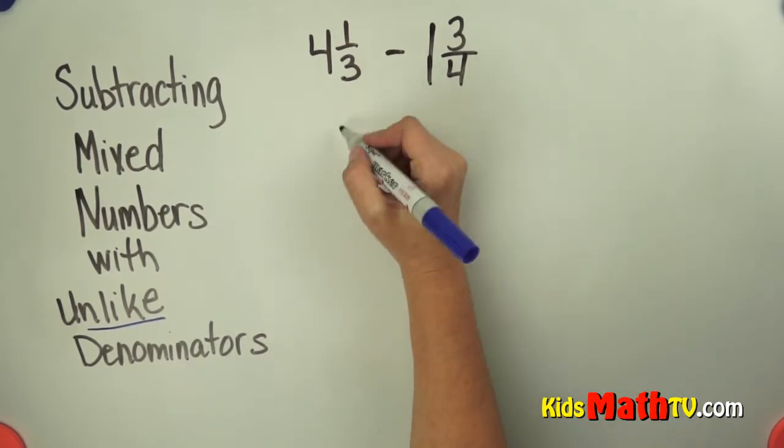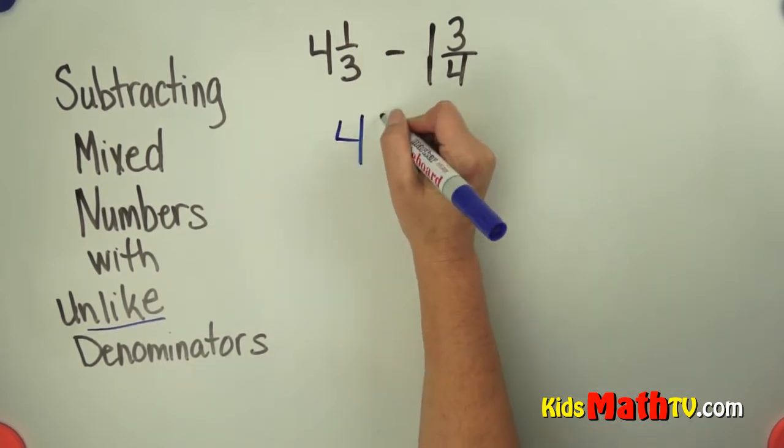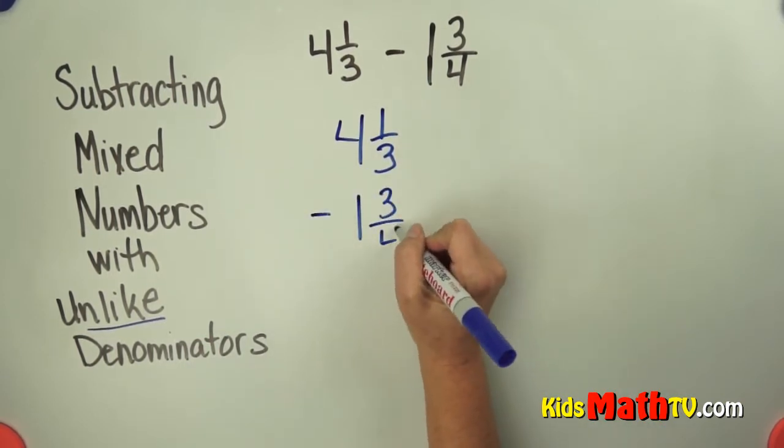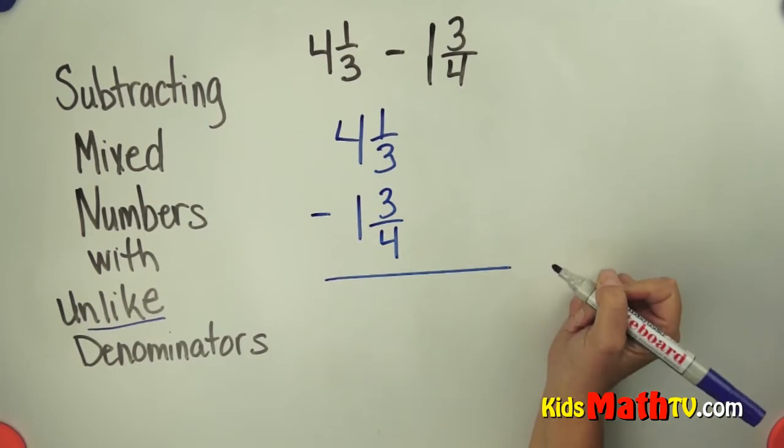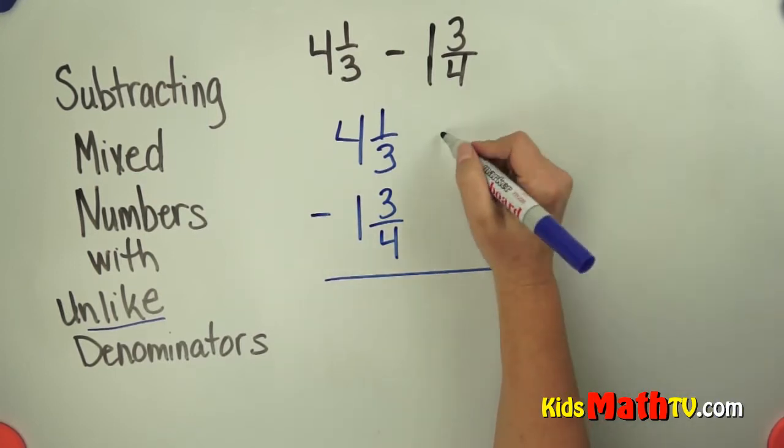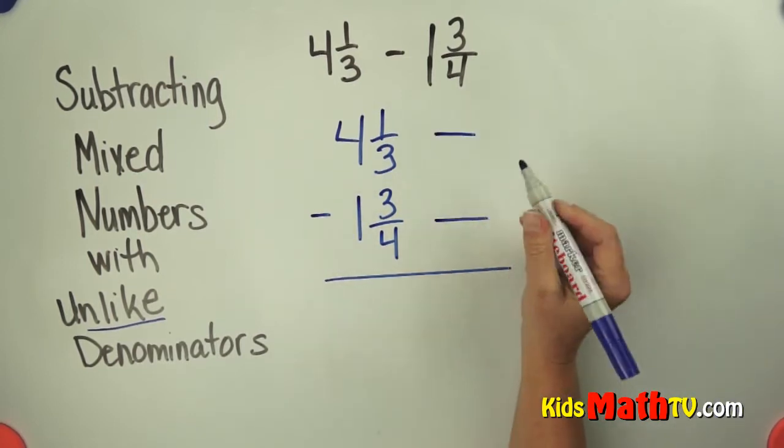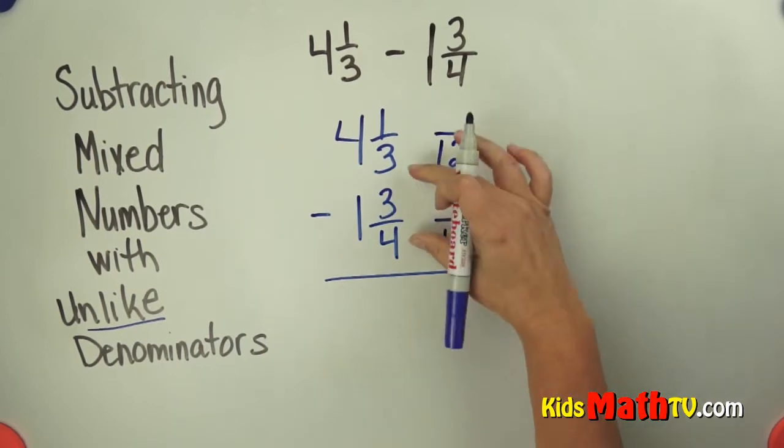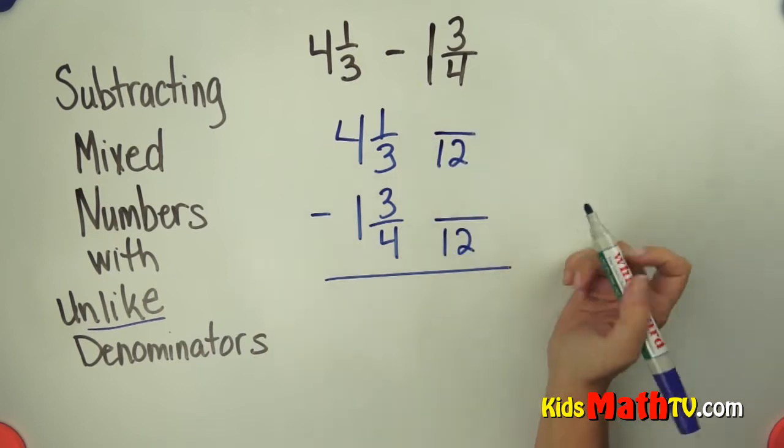So I'm going to rewrite this vertically, 4 and 1 third, subtract 1 and 3 fourths. First thing we have to do is make a common denominator. And I'm going to use 12 as a common denominator. 12 is the least common multiple of 3 and 4.